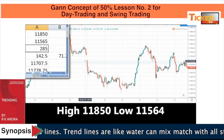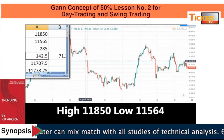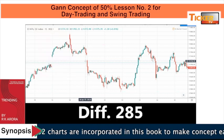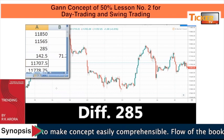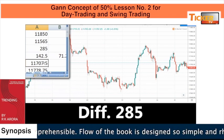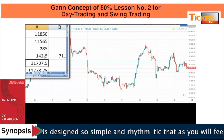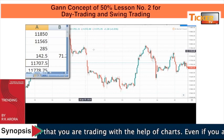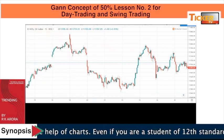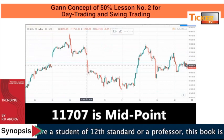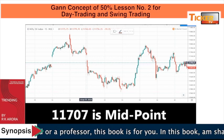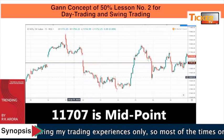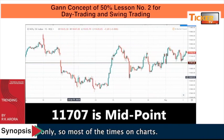Let's take the low as 11,565 by rounding it. The difference between the two is 285. I will take half of it — half is 142.50. I will add that into the low or subtract from the high. If I add 142.50 to 11,565, I will get 11,707. This is the midpoint.